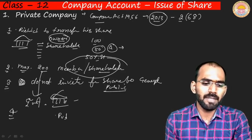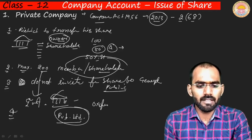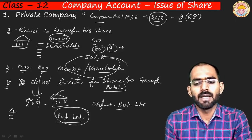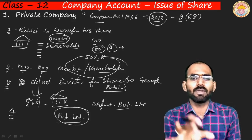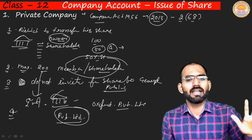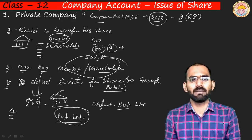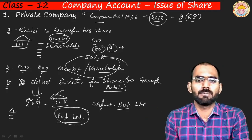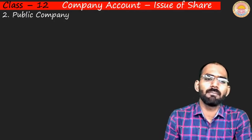The fourth point is that every private company must have 'Pvt. Ltd.' (Private Limited) written at the end of its name. For example, 'Oxford Company Private Limited.' By the name of the company you can identify whether it is a private company. Private companies cannot sell shares to the general public, but they can take loans as borrowed funds.